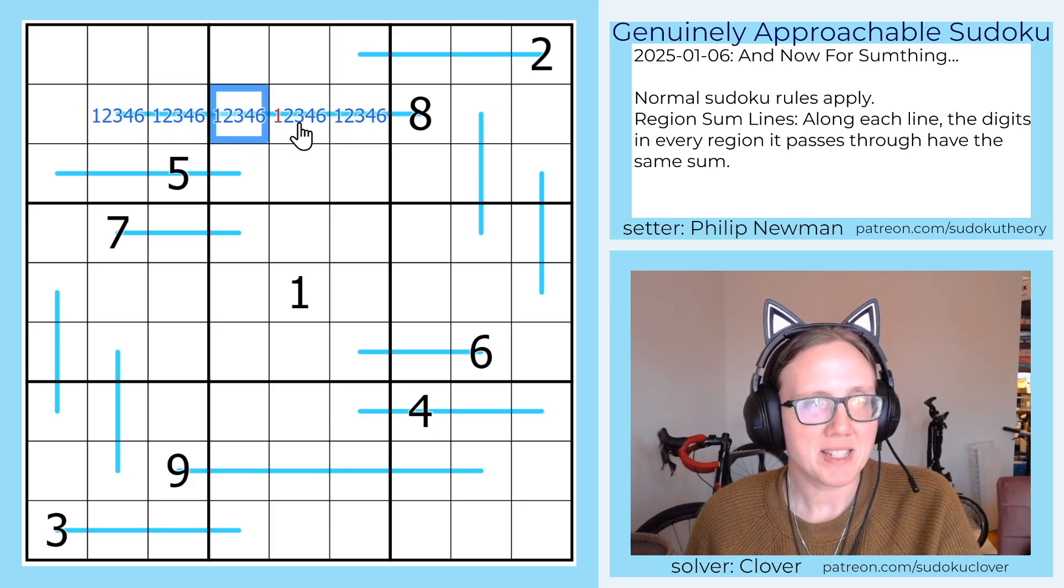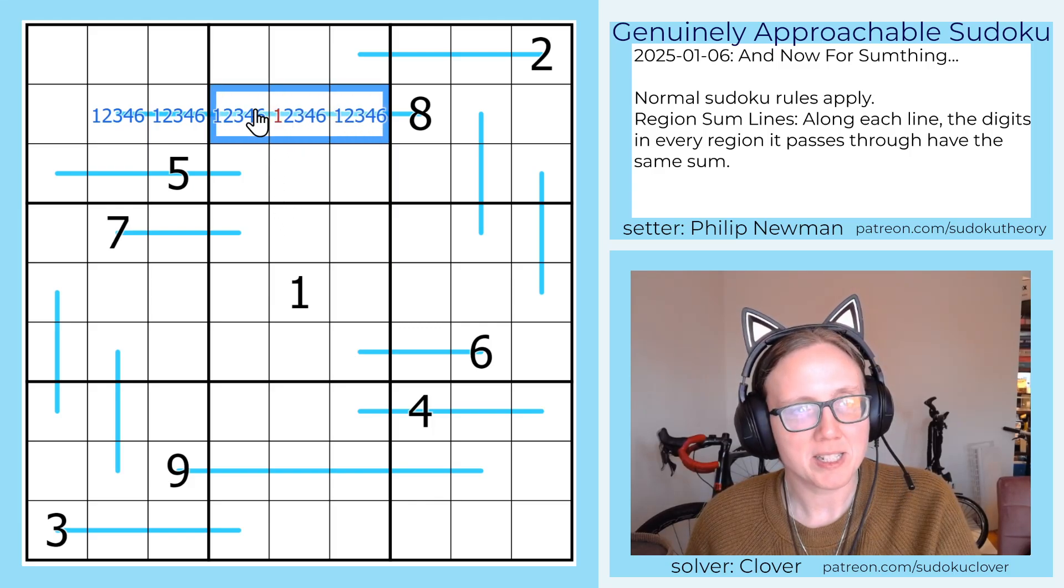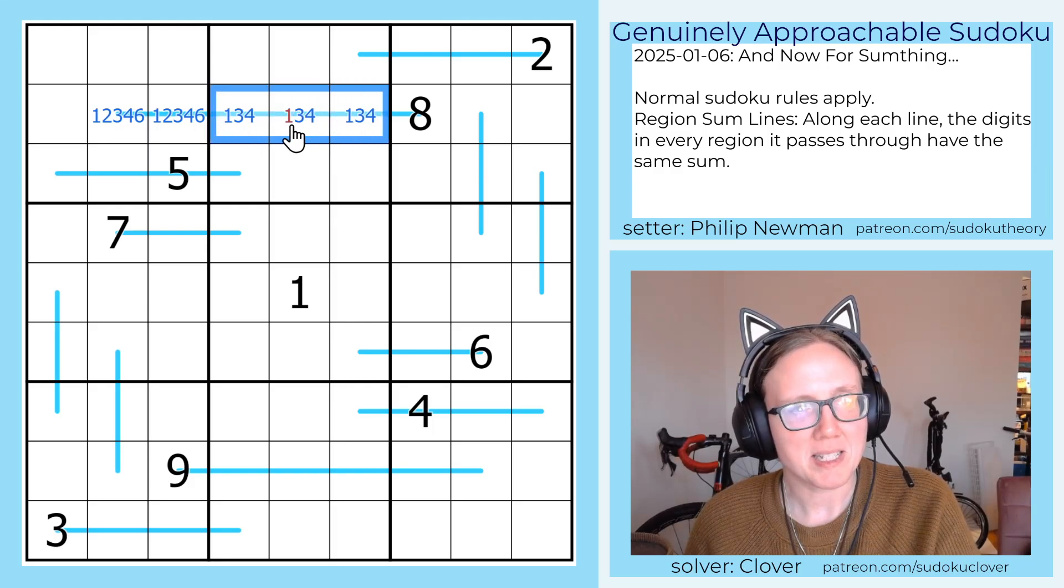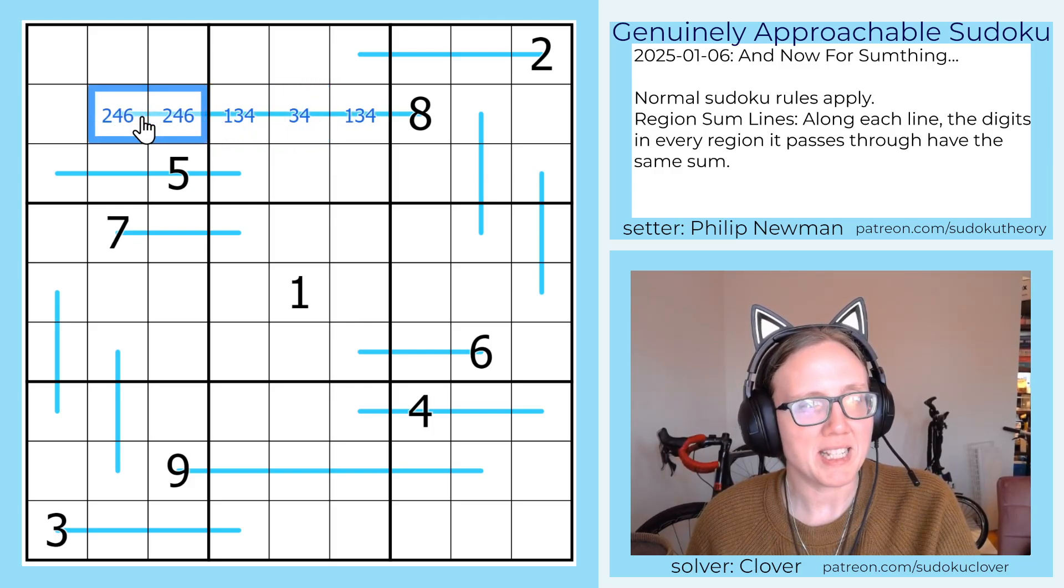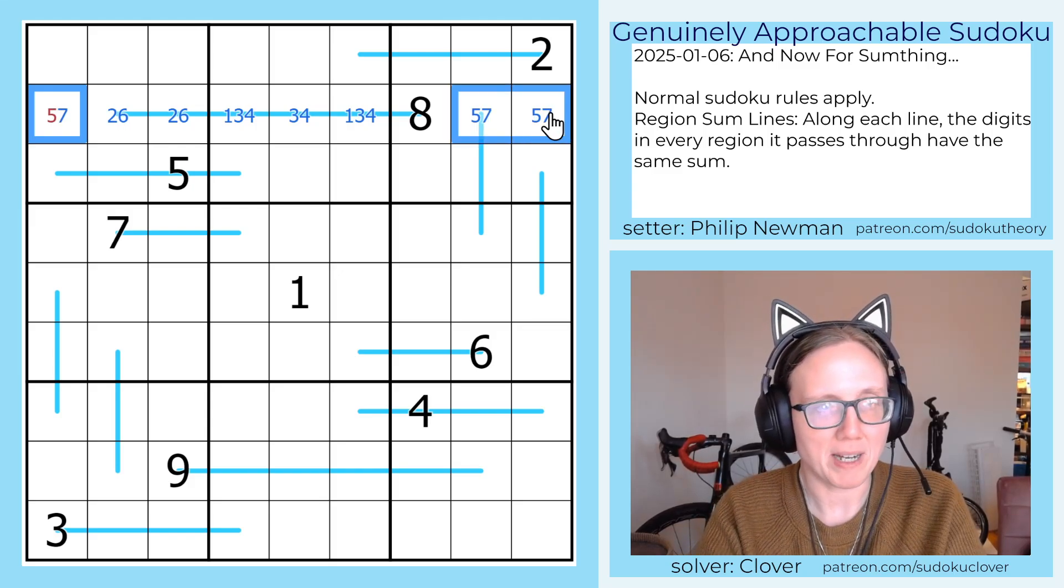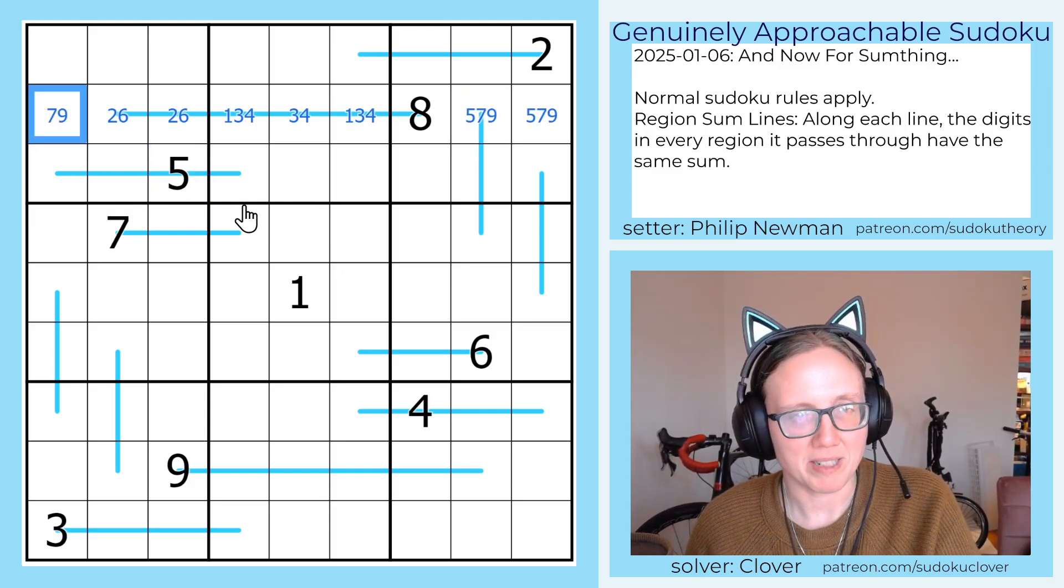The 6 can't be part of a three-digit sum that totals to 8, so we can eliminate that. To make 8 out of these numbers, it has to be 1, 3, and 4, and then these will have to be 2 and 6. These are going to be 5, 7, and 9. I can eliminate 5 here because there's a 5 sitting right there.